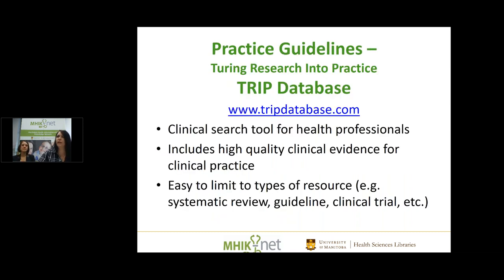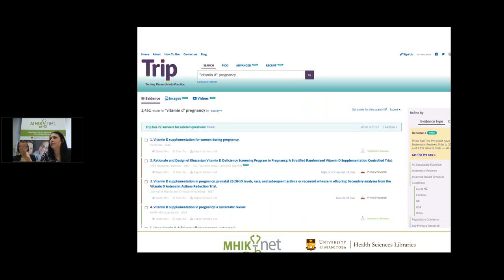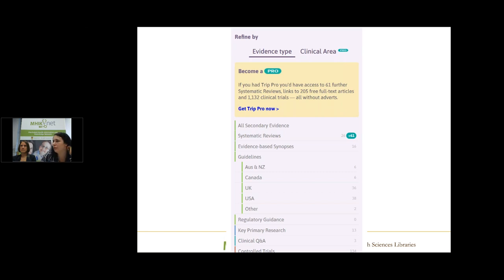Another place to search for guidelines is the TRIP database, which we use and like quite a bit. It works similarly to the CPG Infobase but is worldwide and international, including several types of resources. Searching guidelines is free. For a search like 'vitamin D in pregnancy,' it comes up with quite a few results. On the right-hand side there's a tab for guidelines broken down by region: Australia/New Zealand, Canada, UK, USA, and other guidelines — so you can see where the information is coming from.